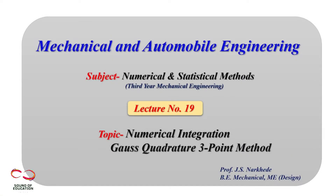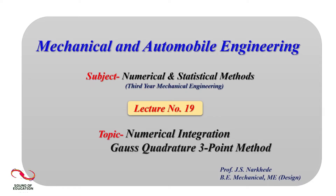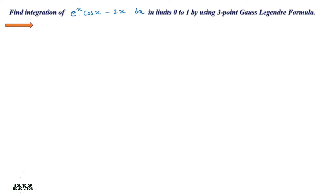Hello all, welcome to the new session. In this session we are going to discuss the step-by-step procedure to solve a numerical by using the Gauss quadrature 3-point method. The previous session was about the Gauss quadrature 2-point method. This is the 3-point method — a similar kind of standard relation where you put in the values, calculate, and get the final answer. We will solve a numerical directly: calculate the integration of e^x·cos(x) − 2x dx from 0 to 2 using the 3-point Gauss-Legendre formula.